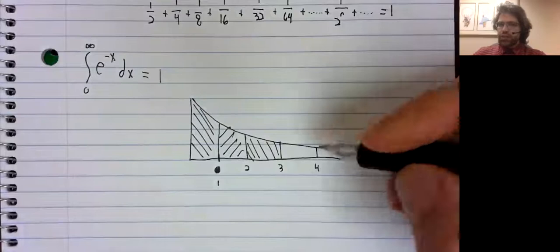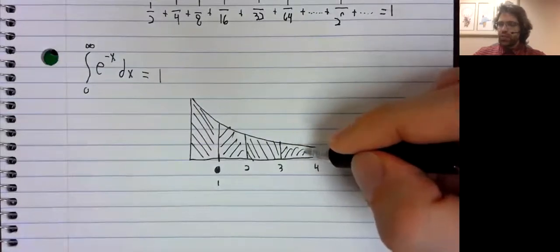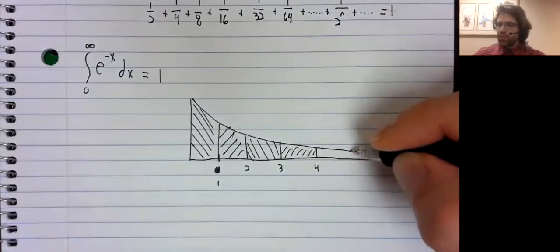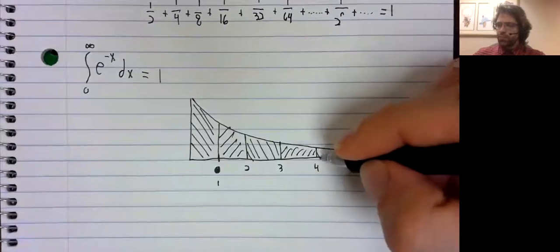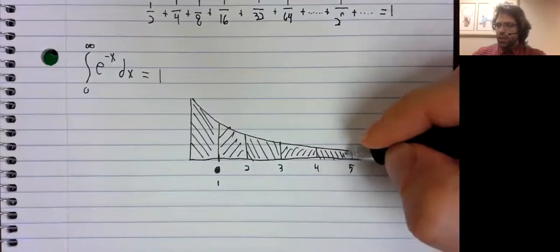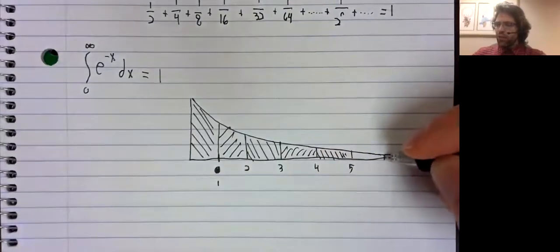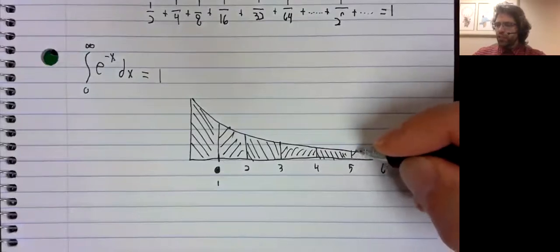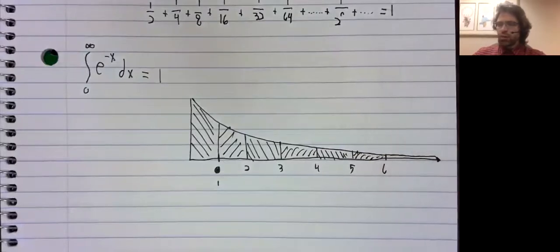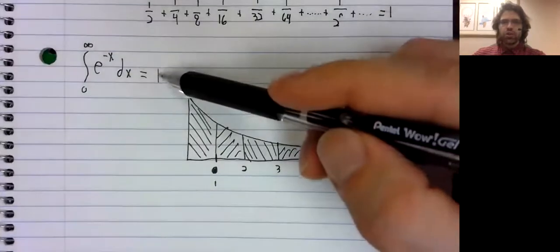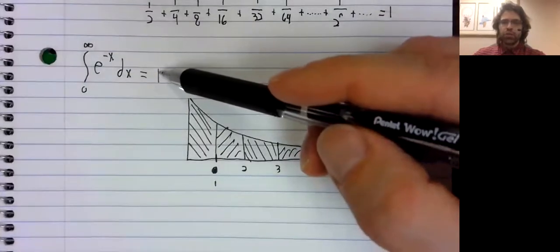and from two to three, and from three to four, and so on, and you add all of these areas together, you should get the total area under the curve.